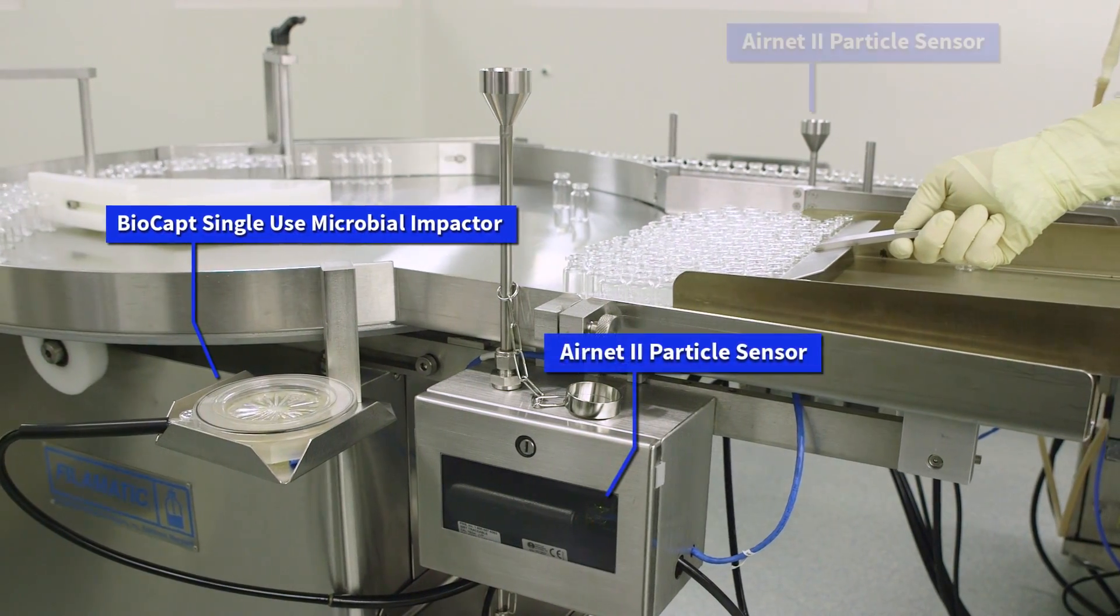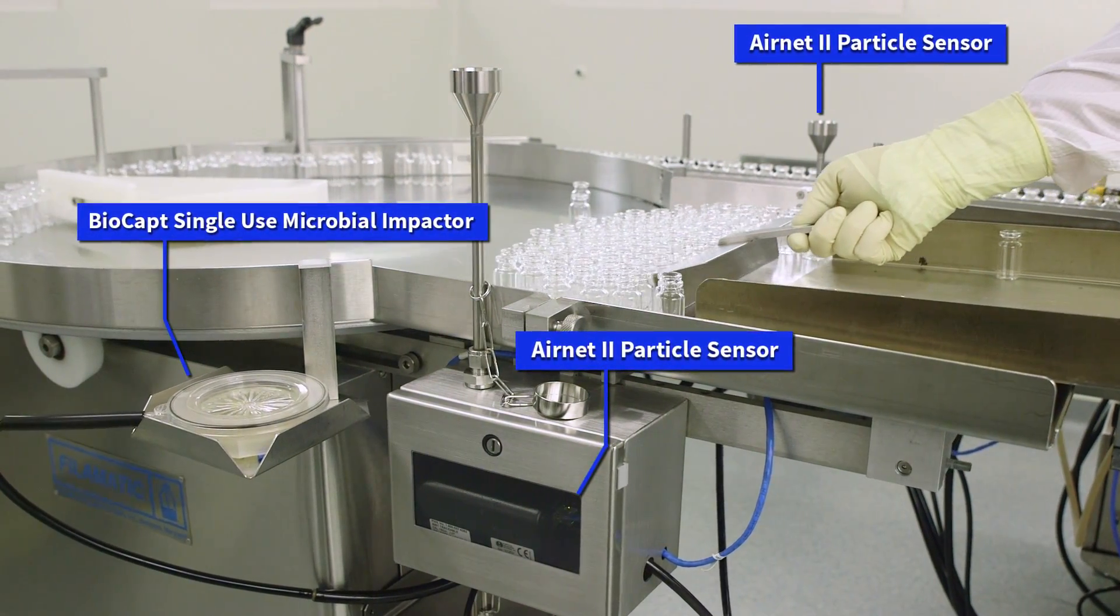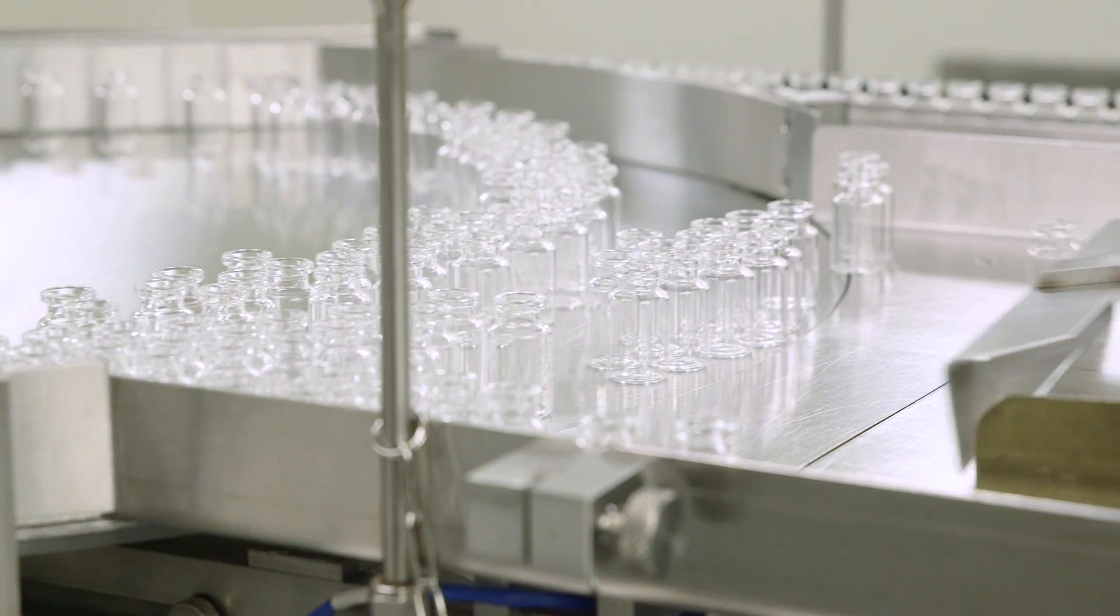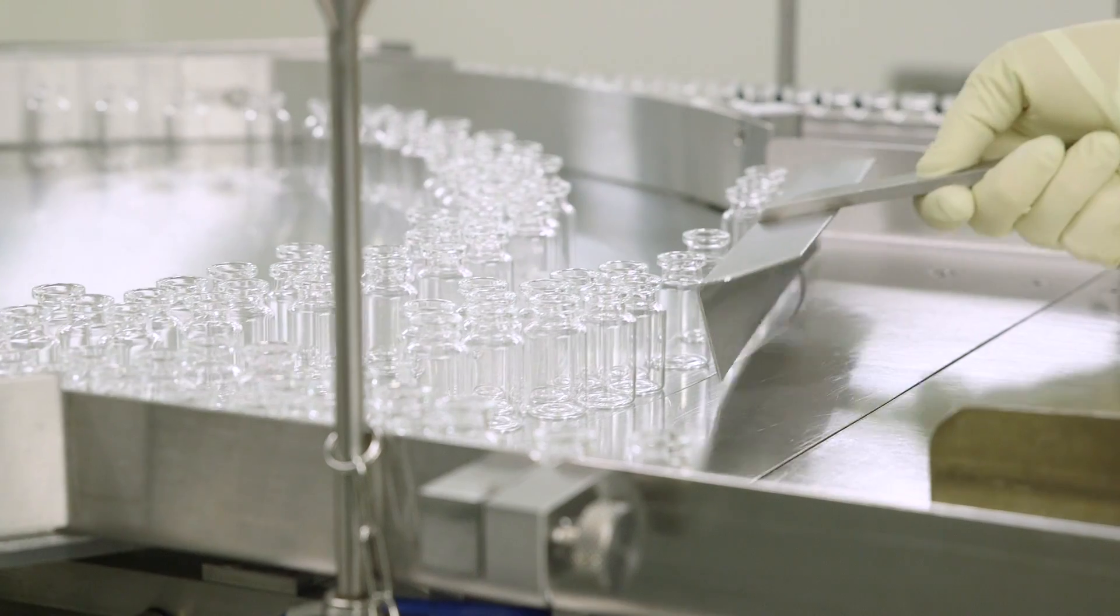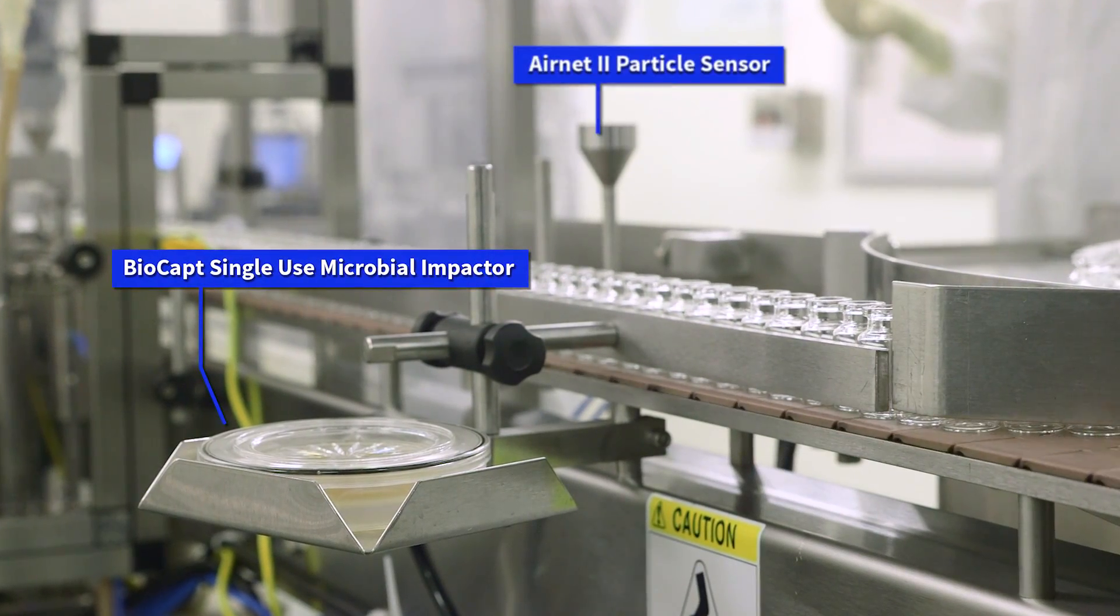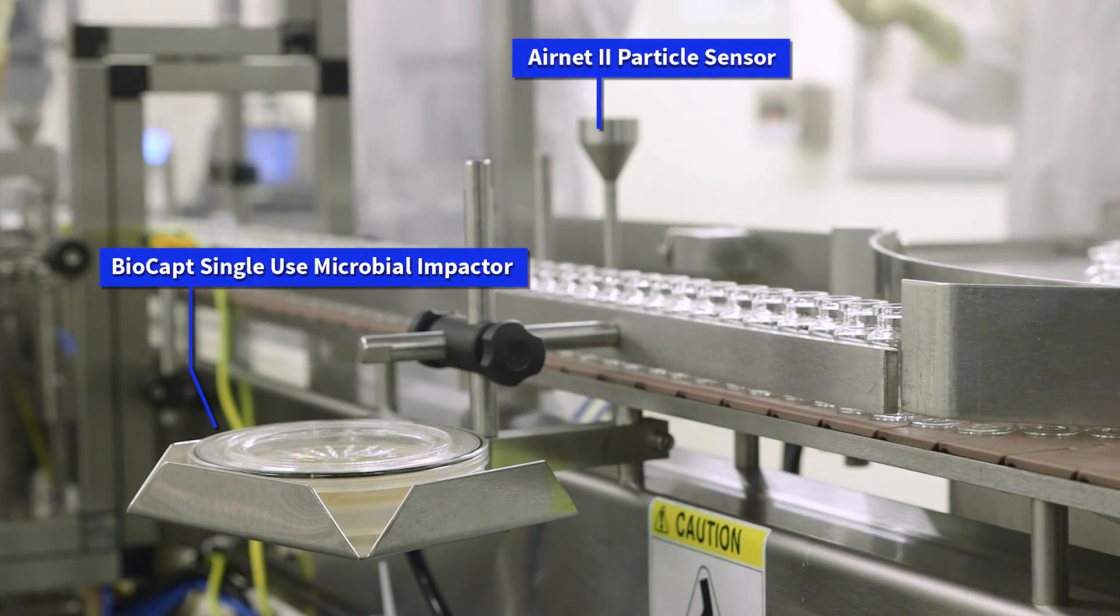Monitoring of the manufacturing process begins where the first contamination may occur. Particle and microbial monitoring is conducted where the vials are loaded onto the accumulator. Monitoring continues while the empty vials are transported to the filling operation.